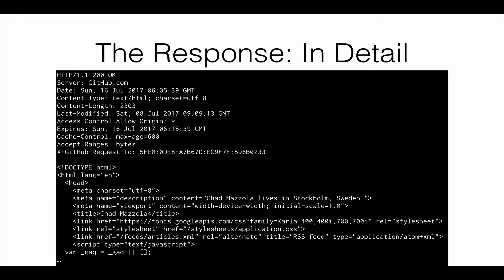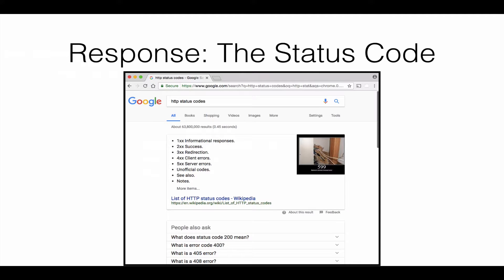Now let's look at the response in more detail. Like the request, the response also starts off with a beginning line. That line starts with the HTTP version number, and then it returns a status code and a message — in this case status 200 with a message of OK. If you want to learn more about all the different status codes, you can Google for HTTP status codes.